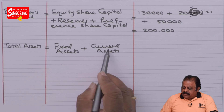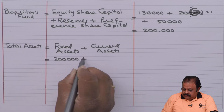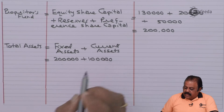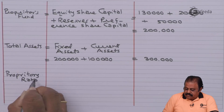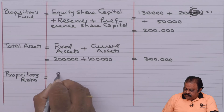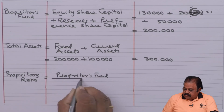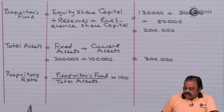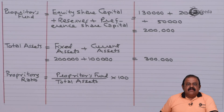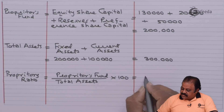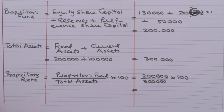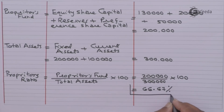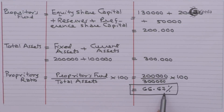Total assets equals fixed assets plus current assets. Fixed assets are 2 lakhs and current assets are 1 lakh, giving total assets of 3 lakhs. Proprietary ratio equals 2 lakhs divided by 3 lakhs, which equals 66.67 percent. Here, the proprietary ratio is better than the standard of 65 percent.